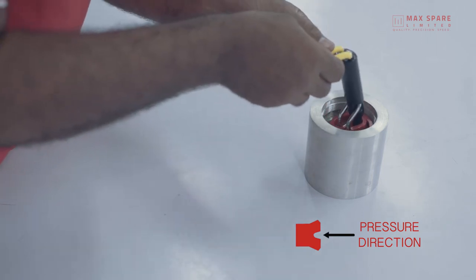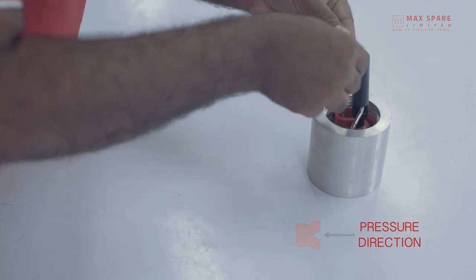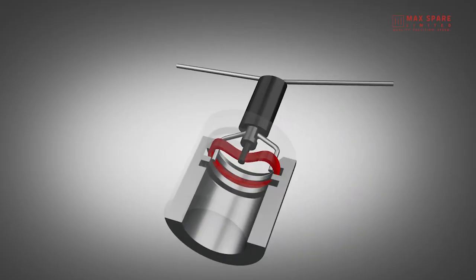Install the seal in the groove by untwisting the seal twister, and ensure that it is completely well fitted in the groove.